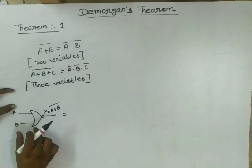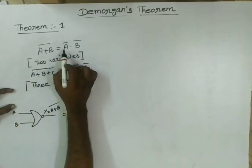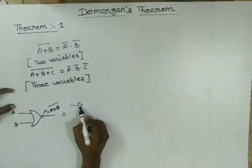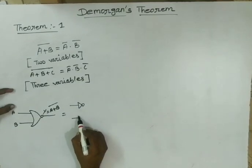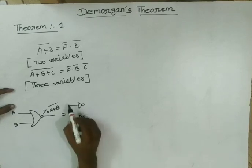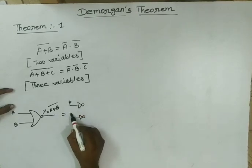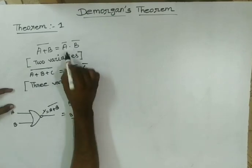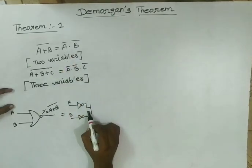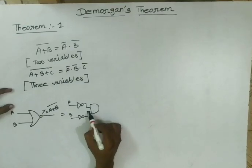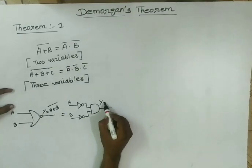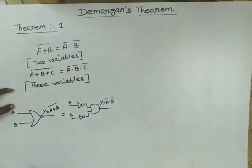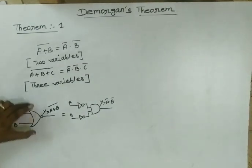Write and say A bar dot B bar. A bar — that means NOR gate. B bar — that means NOR gate. A dot B equal to — it is called the AND gate. This dot means AND gate. Y equal to A bar dot B bar. That is called the diagram verification of the theorem.